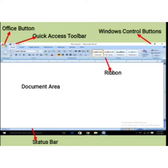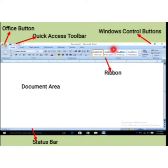Uske baad, yahan par dekheye — this is Office Button. Jabki Word 2016 mein aapko File Tab diya hua hai, hum Word 2007 kar rahe hain to ismein Office Button given hai. Office Button aur File Tab dono mein commands same hoti hain. Ab batao — Title bar ke bilkul neeche start ho jaata hai hamara Ribbon Area. This area is called Ribbon. Ribbon mein kya-kya hota hai? Tabs and Groups.